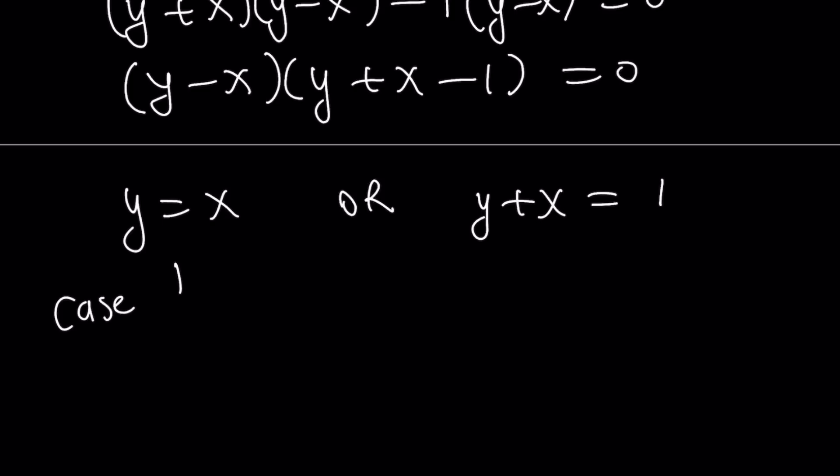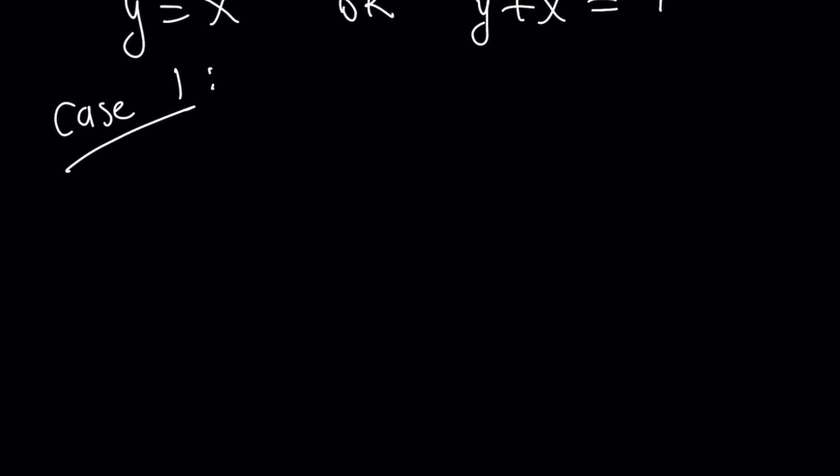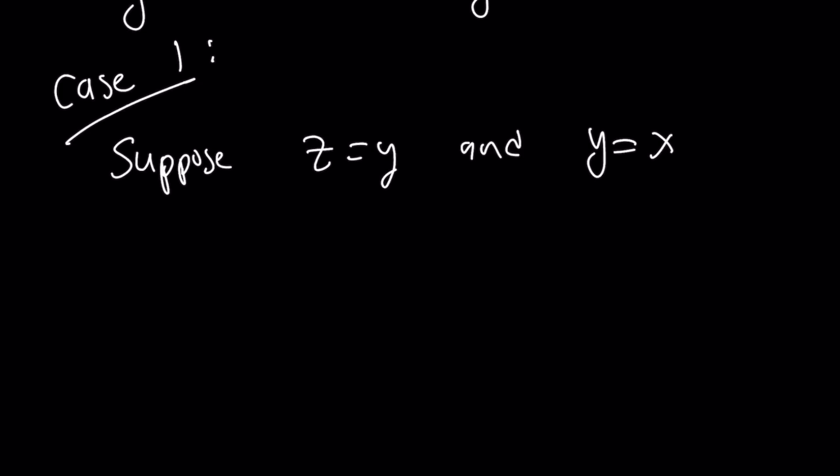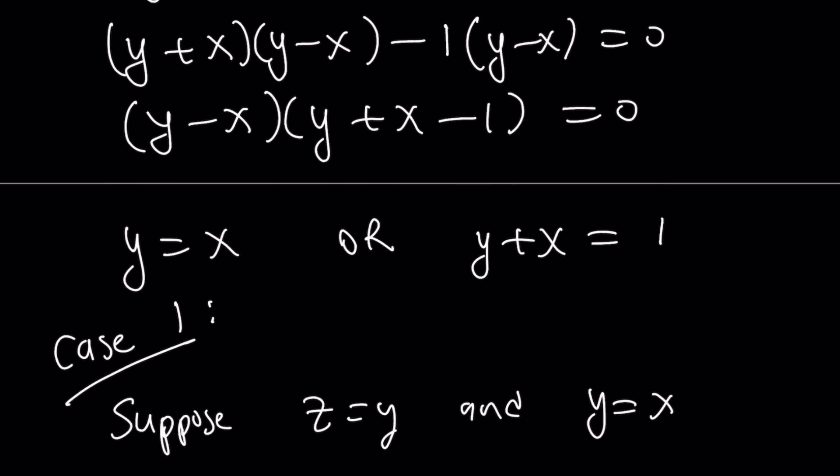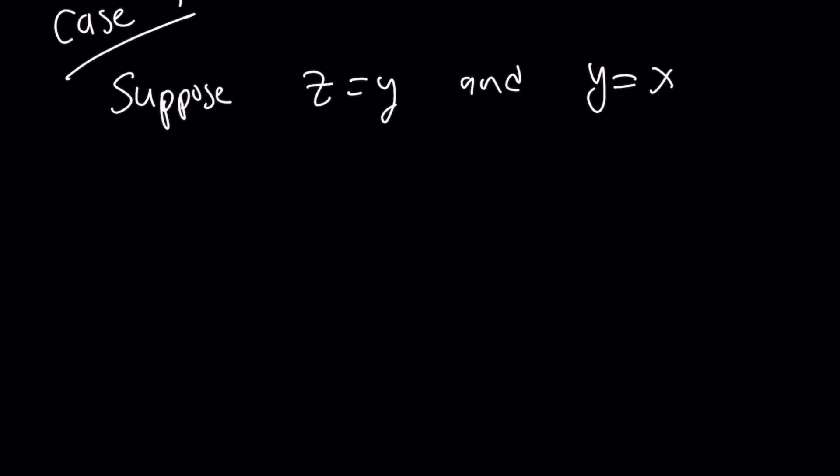So case number one. Case number one is suppose z equals y and y equals x. So I'm kind of getting the first statements from each, from each scenario. So what is that supposed to mean? That means z is equal to y, but y is equal to x, so they're all equal. This means x equals y equals z.